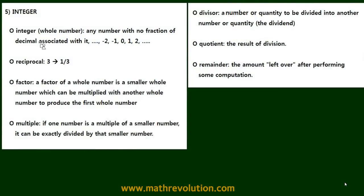Next, we're on number five: integers. Integers are whole numbers not associated with any fractions or decimals. A reciprocal is a multiplicative inverse, so the reciprocal of three would be one over three. Now, a factor of a whole number is a smaller whole number which can be multiplied with another whole number to produce the first whole number.